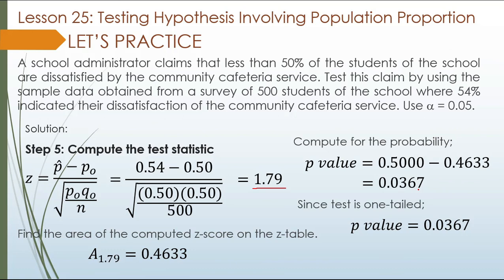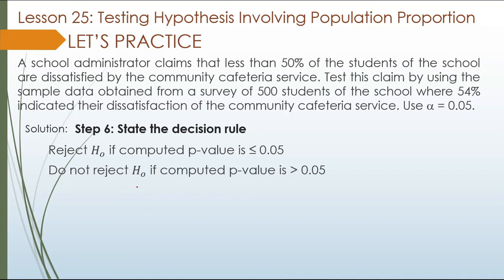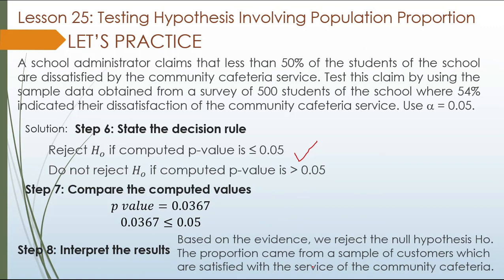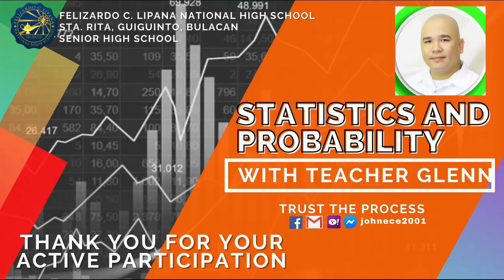Step 6: Compare with alpha = 0.05. The decision rule: reject the null hypothesis if p-value is less than or equal to 0.05. The computed p-value 0.0367 is less than or equal to 0.05. Therefore, we reject the null hypothesis. The proportion from the sample of students dissatisfied with the community cafeteria service supports the administrator's claim.